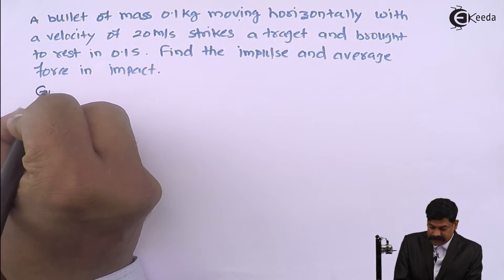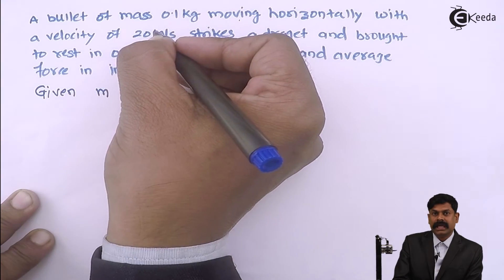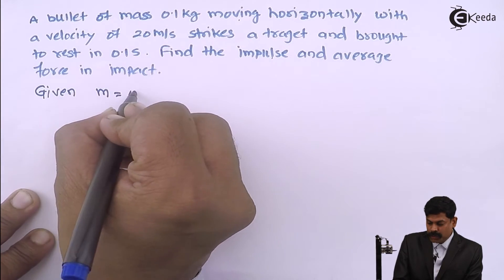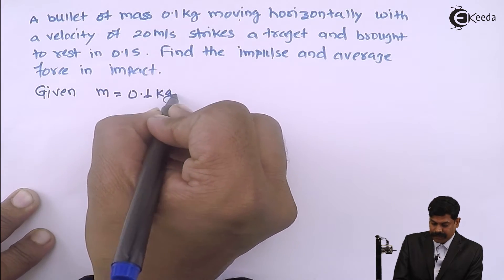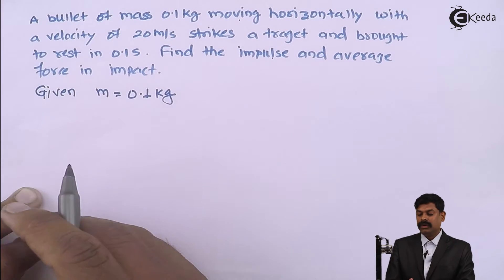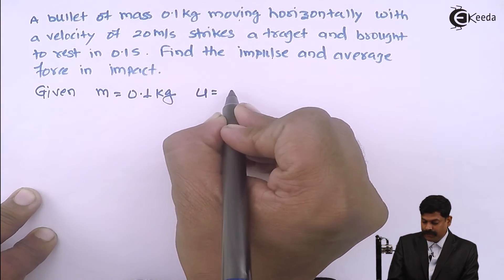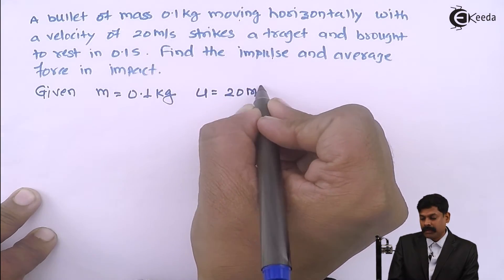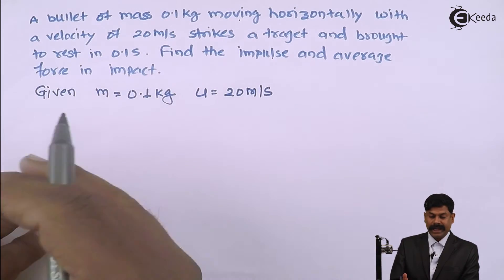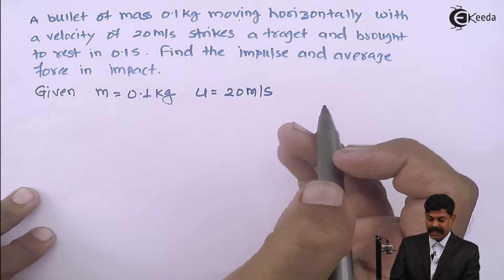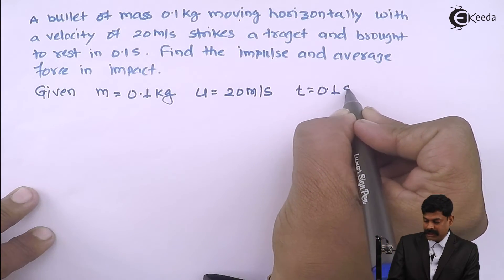Given: mass of the bullet m equals 0.01 kg. Initial velocity u equals 20 meter per second. The bullet is brought to rest, so final velocity v equals 0. Time t is given as 0.1 second.